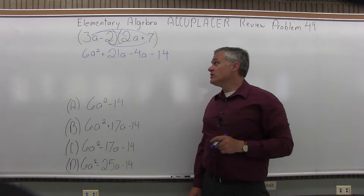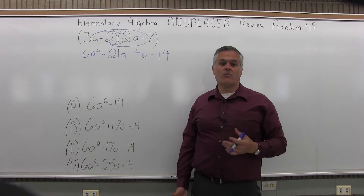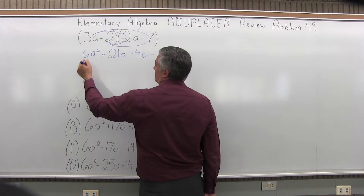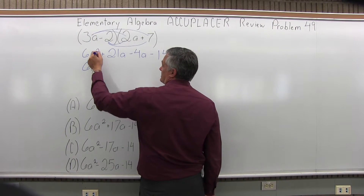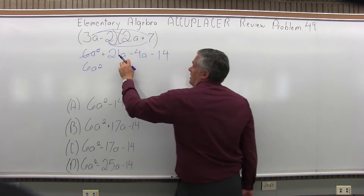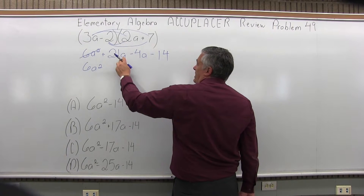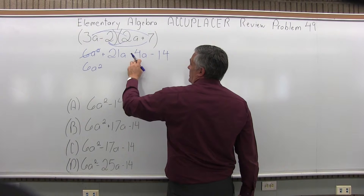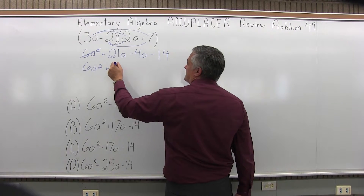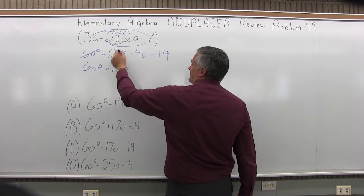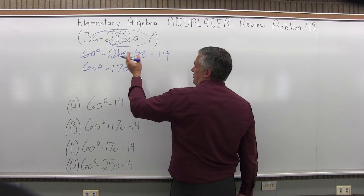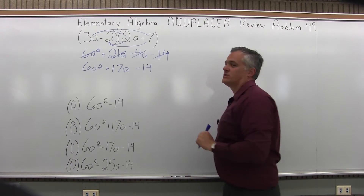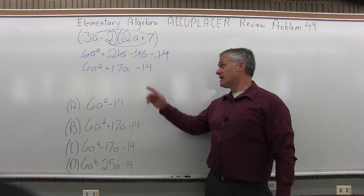Now the two middle terms, 21a and minus 4a, are like terms and can be combined. The 6a squared at the beginning doesn't match anything else, so it goes straight into the answer. Positive 21a and negative 4a combine to give positive 17a. Finally, minus 14 has no other plain numbers to combine with, so minus 14 goes into the answer — pay attention to that sign, minus 14.